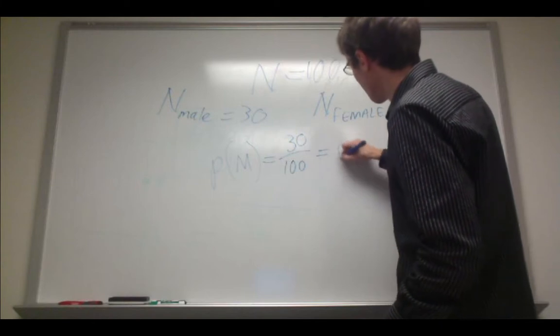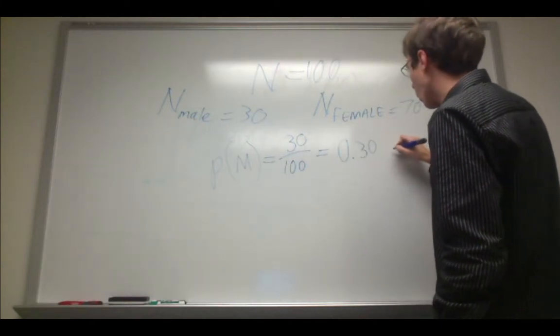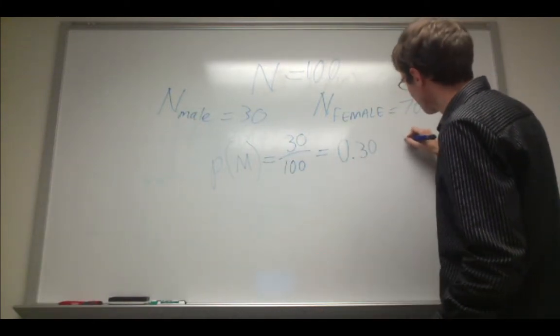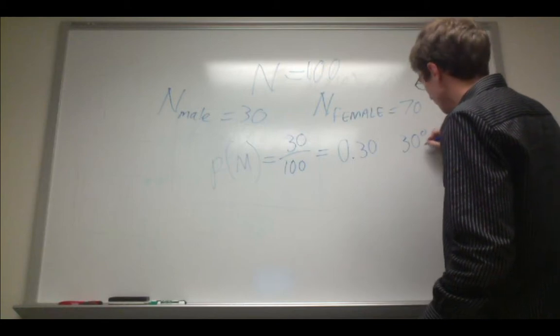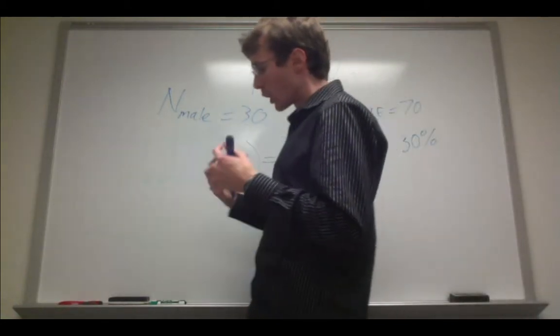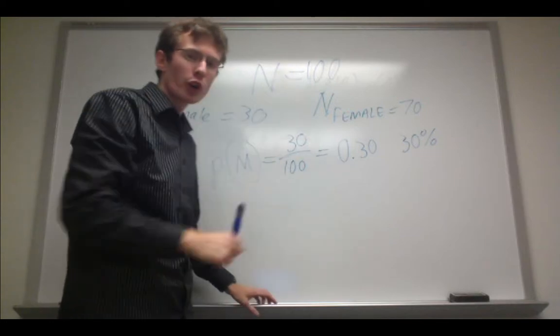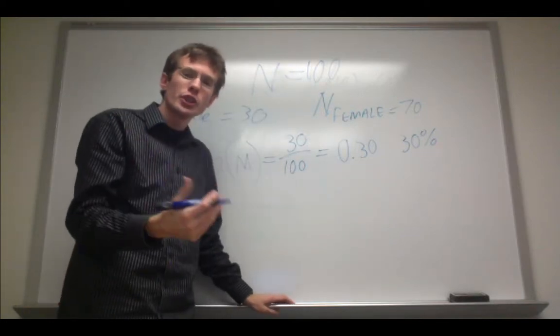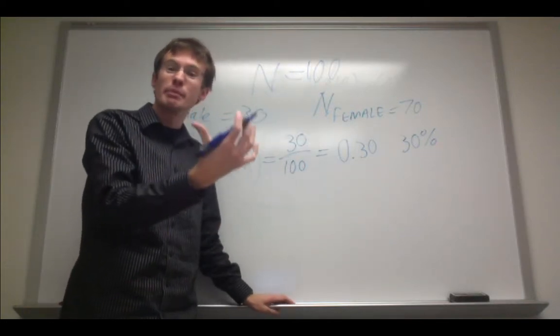So, the probability is 0.3, or 30%. In other words, if I were to draw an individual at random from this group of 100 people, there's a 30% chance that that person would be male.